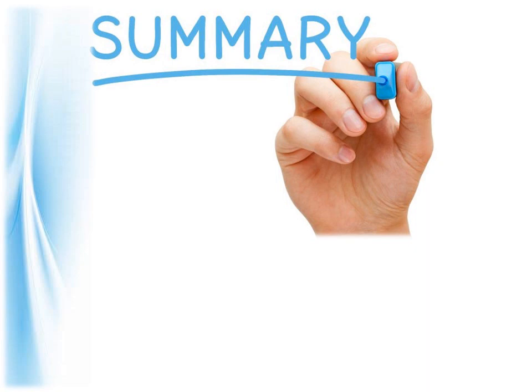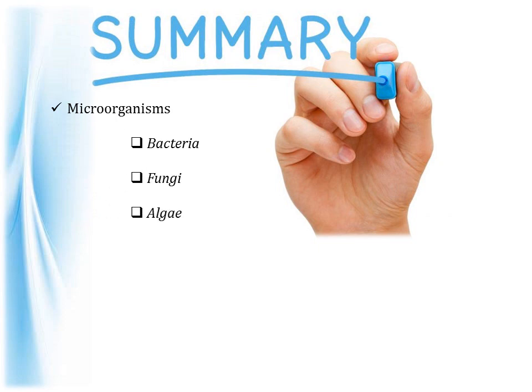We have come to the end of our video, so let's take a quick recap. First, we studied what microorganisms are — living organisms around us which we cannot see with our naked eye. Then we studied the classification of microorganisms: bacteria, fungi, algae, protozoa, and virus. We briefly discussed all these groups, including examples and the diseases caused by each. Then we studied where these microorganisms live — they are everywhere from hot to cold regions, both inside and outside living organisms.